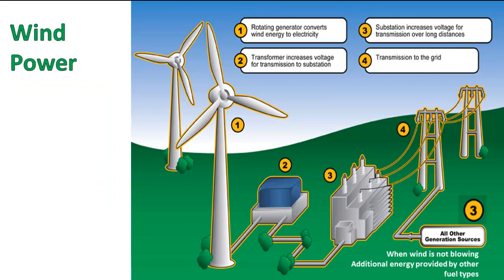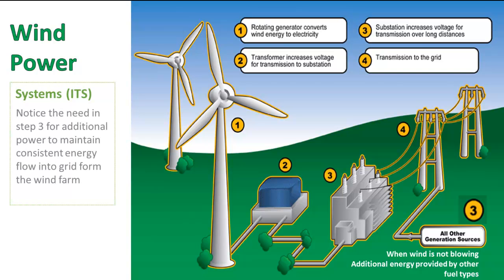But the system itself is relatively elegant if you think about it. At number one, we have a rotating generator that converts wind energy to electricity — a turbine. A transformer increases voltage for transmission to a substation. The substation increases voltage for transmission over long distances. And number four is transmission to the grid. However, when wind is not blowing, additional energy is provided by other fuel types. So the elegance of the system doesn't fully show up in this diagram, and I had to do a little editing to present a more holistic and fair picture of the technology. Still pretty awesome, though.